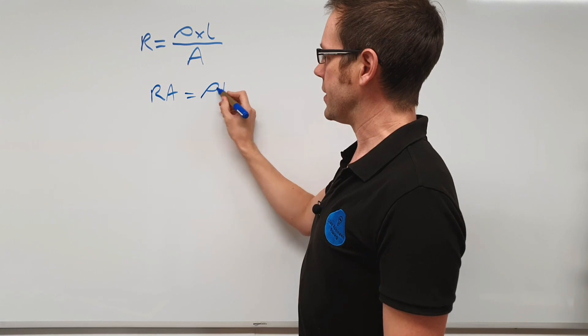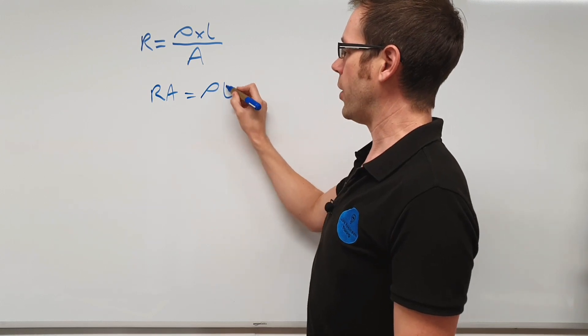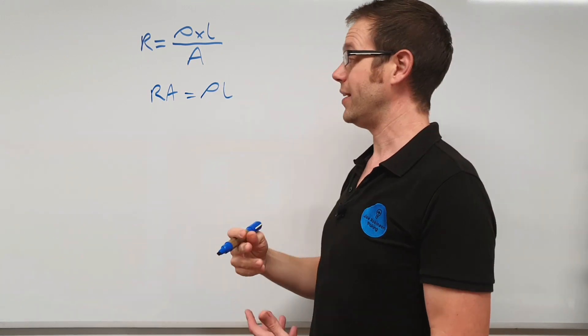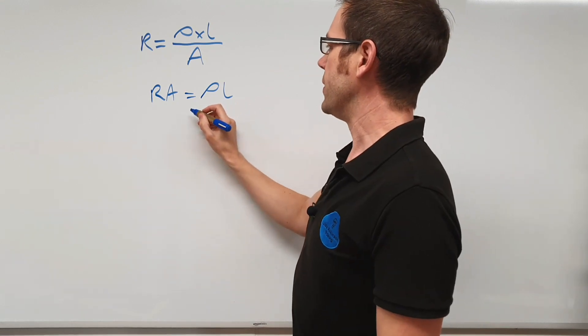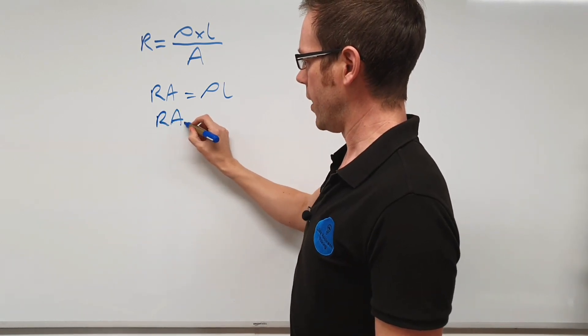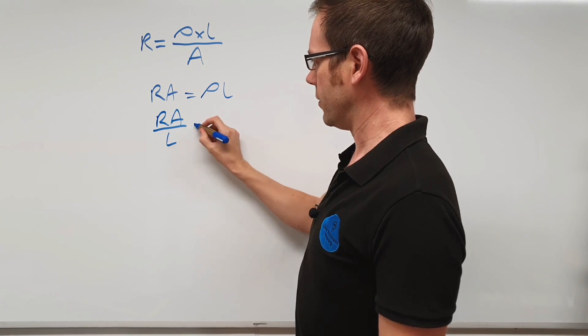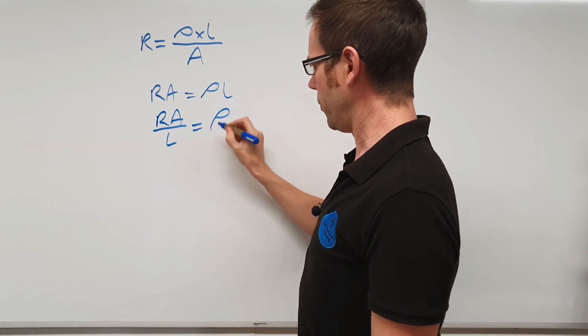And then we want to get resistivity by itself. We're currently timesing it by L. The opposite of timesing by L is to divide by L, which means that we're going to divide both sides by L, which means we end up with RA divided by L is equal to rho like that.